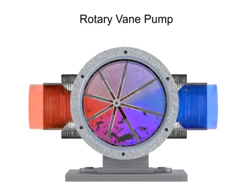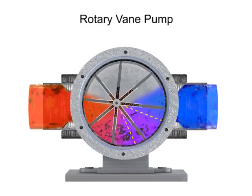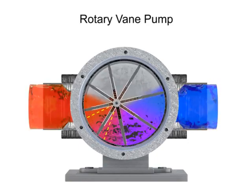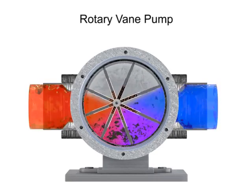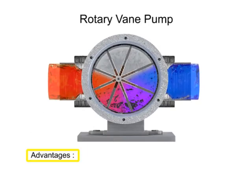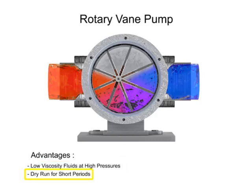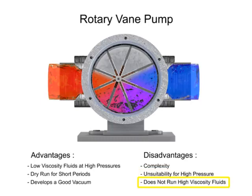Fluid enters at the largest chamber. As the vanes rotate and retract, the chambers get smaller, forcing fluid to exit through the discharge port. The advantages of vane pumps are that they can handle low viscosity fluids at relatively higher pressures, can dry run for short periods, and develop a good vacuum. Their disadvantages include complexity and their unsuitability for both high pressure and high viscosity fluids.